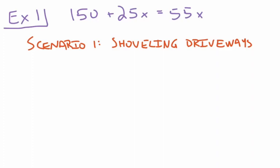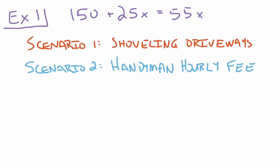Another scenario I thought of that could represent this equation might be the fee that a handyman might charge to come to a person's house to do some work. And so there's two different handymen. One handyman charges $150 just to come to your house and then charges you $25 for every hour that he's there, while the other handyman doesn't charge an initial fee at all, but he will charge you $55 for every hour that he's there. So how many hours would it take for them to work in order to both earn the same amount of money? So second scenario again would be a handyman's hourly fee and which handyman do you want to go with based on how many hours you think a project might take.